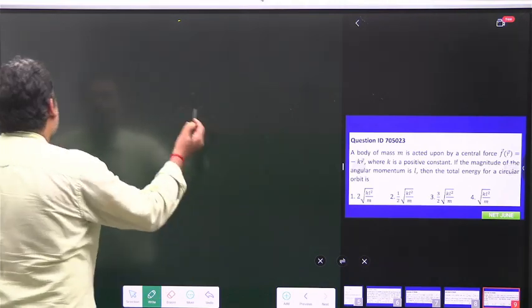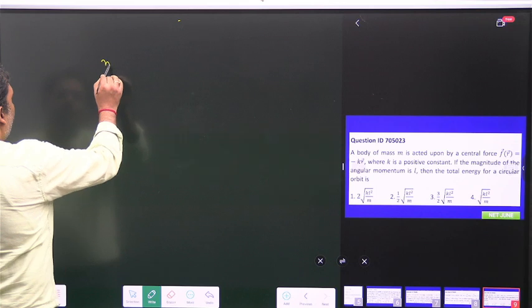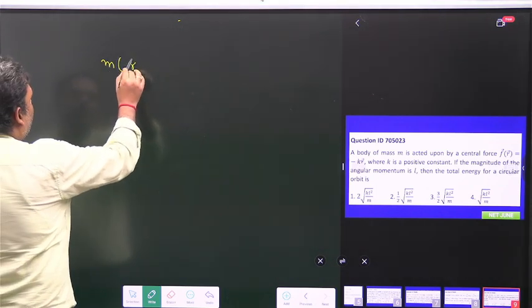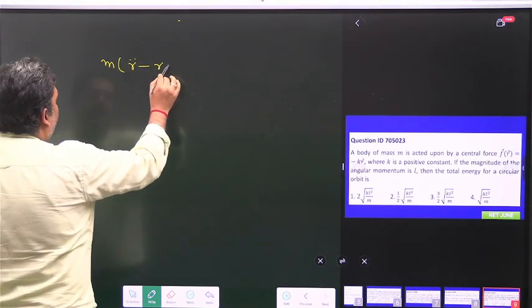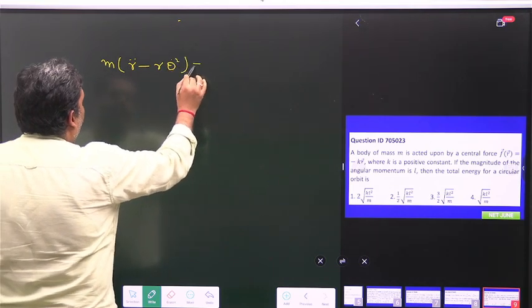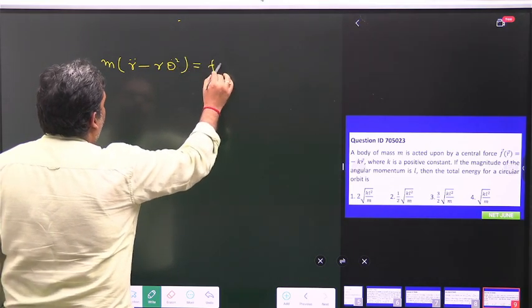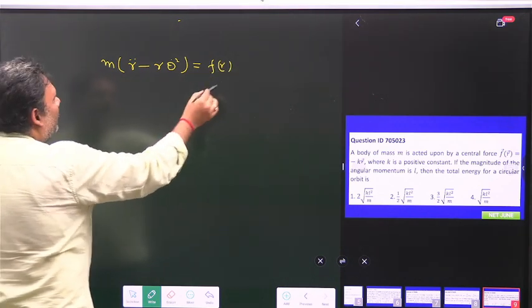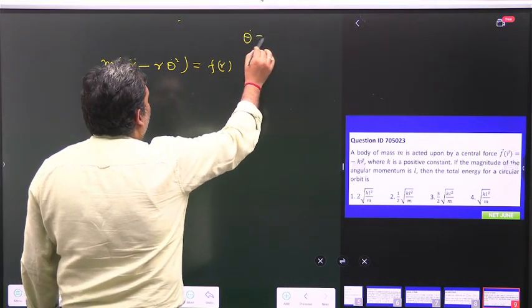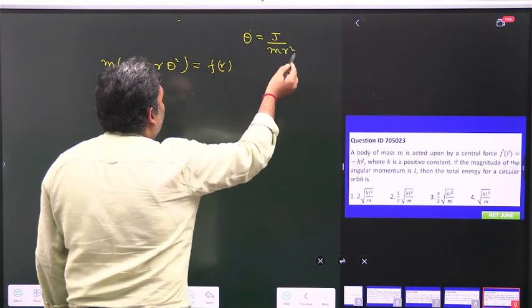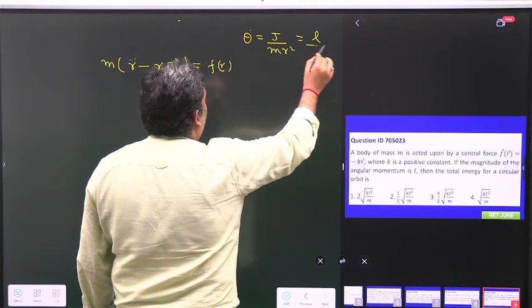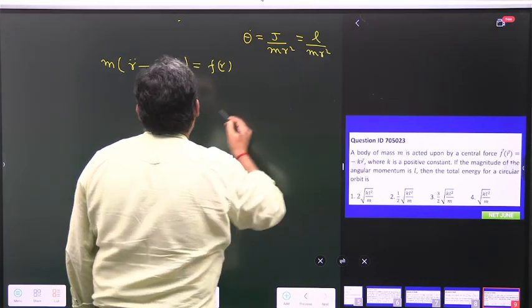So a particle is moving in a circular orbit. We can go for Newton's law: m r double dot minus r theta dot square is equal to F(r), and here theta dot is equal to j upon m r square, and here j is equal to l, so this will be l upon m r square.